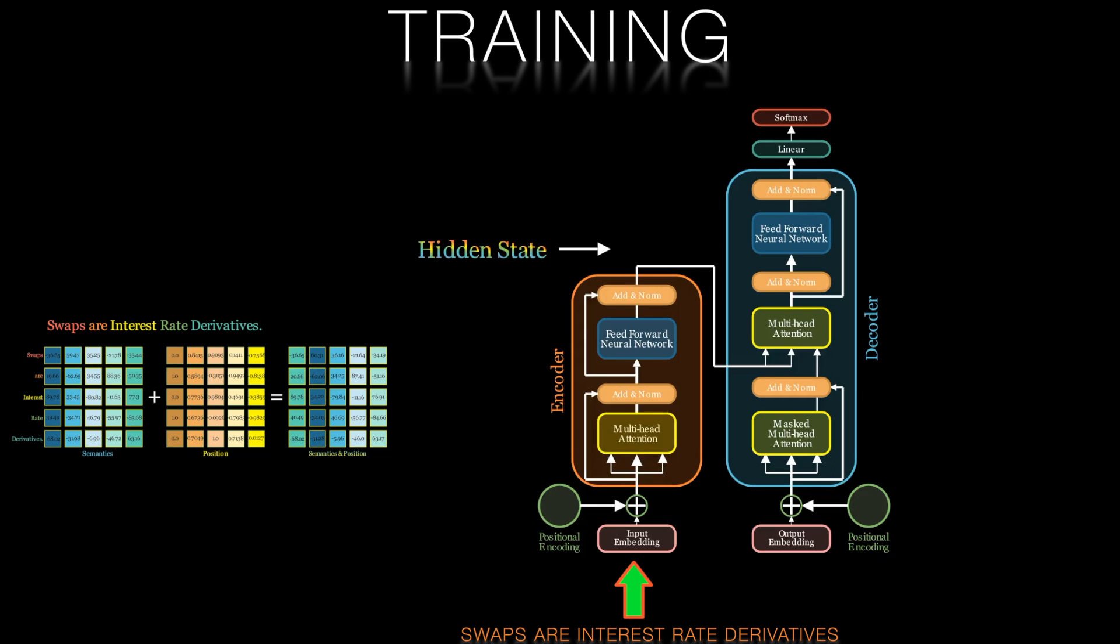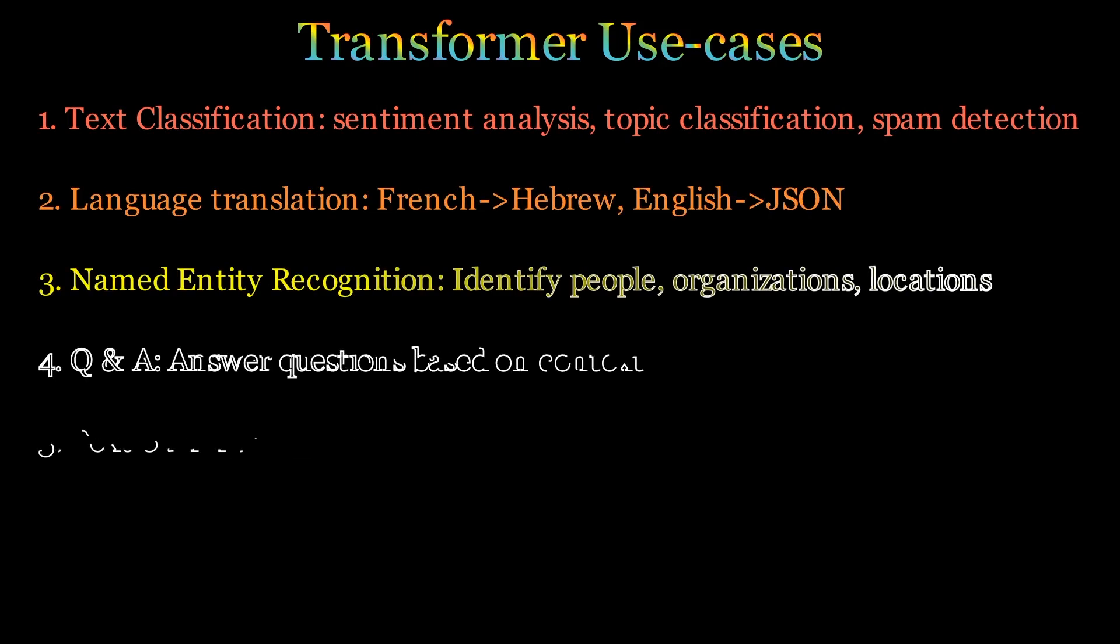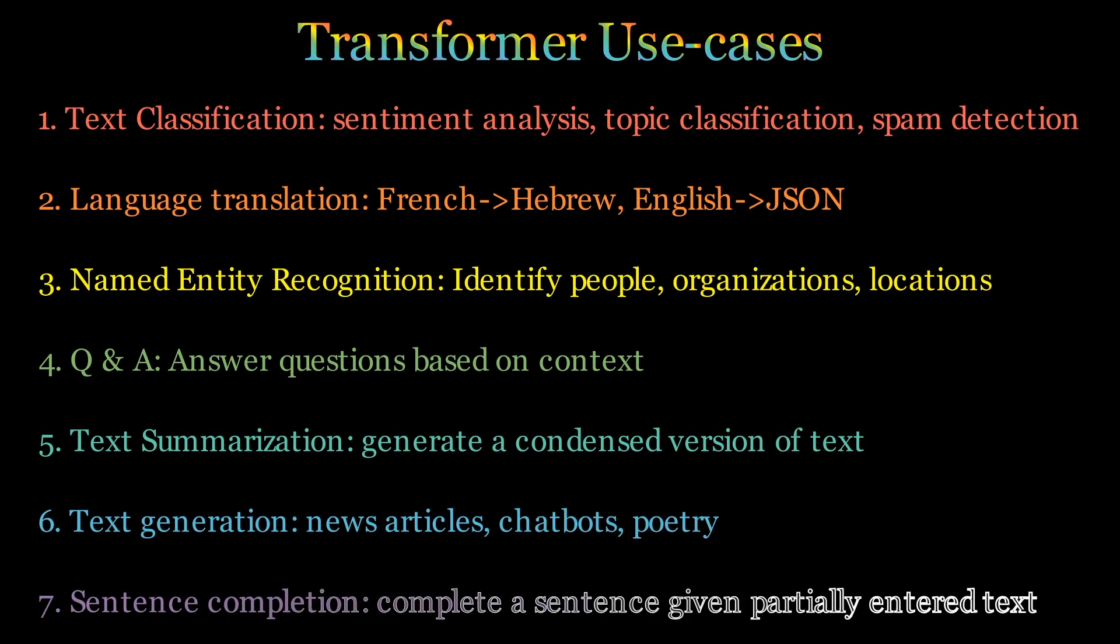This embedding is then passed through a series of layers in the transformer to produce the final output. There are many successful use cases for transformers—several shown on your screen. To illustrate the training process, we'll focus on number seven in this list: sentence completion.